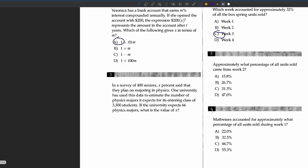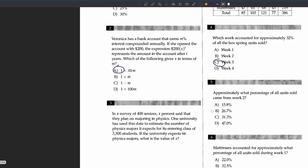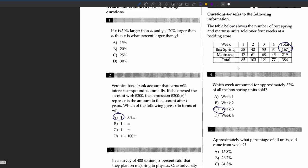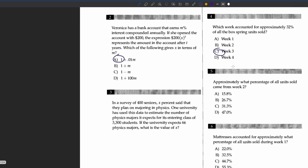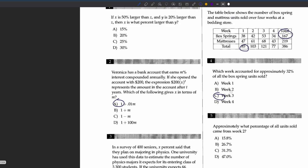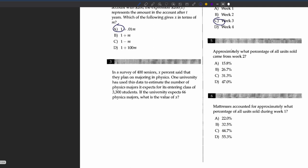Mattresses accounted for approximately what percentage of all units sold during week one? Week one has a total of 85, and since mattresses account for 47 of the 85, we divide 47 by 85, which gives us 55.3 percent.